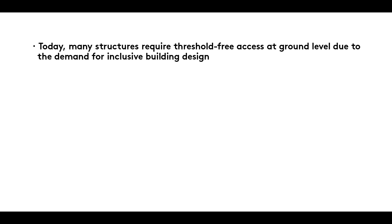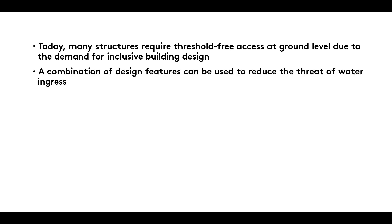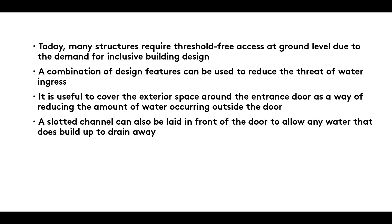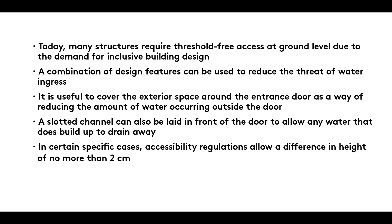Summary: Today, many structures require threshold-free access at ground level due to the demand for inclusive building design. A combination of design features can be used to reduce the threat of water ingress. It's useful to cover the exterior space around the entrance door as a way of reducing the amount of water occurring outside the door. A slotted channel can also be laid in front of the door to allow any water that does build up to drain away. In certain specific cases, accessibility regulations allow a difference in height of no more than 2 cm.